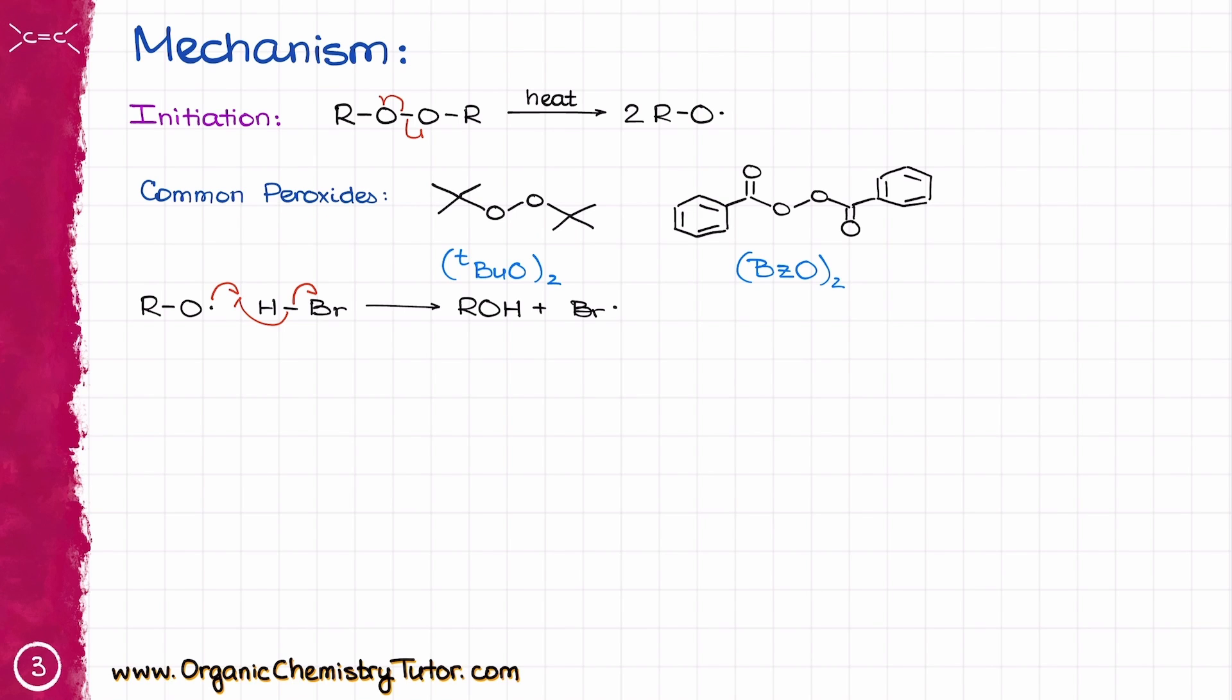which will actually kick start our propagation cycle. So now we are going to move on into the propagation cycle, and the first step of the propagation is going to be the interaction between the Br radical and the alkene. In this reaction, one electron will come from bromine, like this, and another electron will come from the pi bond to make a new bond between bromine and carbon. So these two atoms will be making a new chemical bond between them.